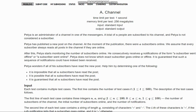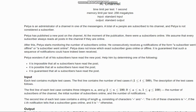Hello everyone, welcome to the channel. We are discussing a question from a panel round 2 of board forces. The question states that Petya is an administrator of a channel in one of the messengers. A total of n people are subscribed to his channel, and Petya is not considered a subscriber. Petya has published a new post on the channel; at the moment of publication there are a subscribers online, and we assume that every subscriber always reads all posts if they are online.